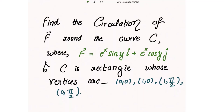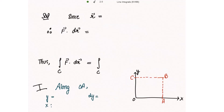We need to find the circulation of a vector point function around the curve C, where F vector is given to us and C is a rectangle whose vertices are given to us. The circulation of a vector point function is the line integral of the dot product of F vector with dr vector, around C.